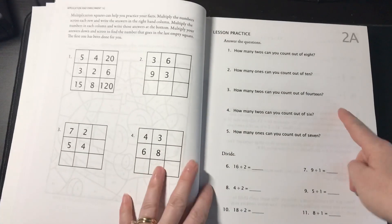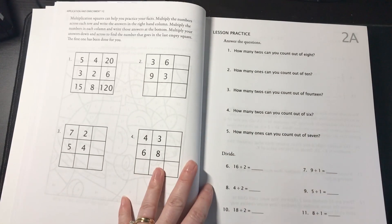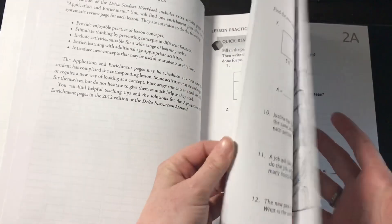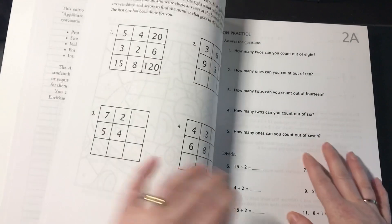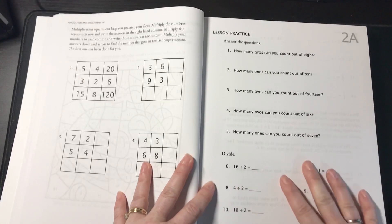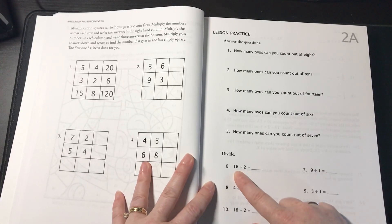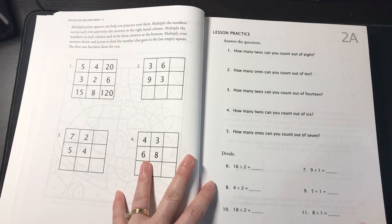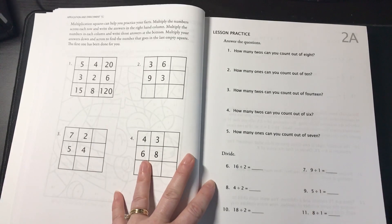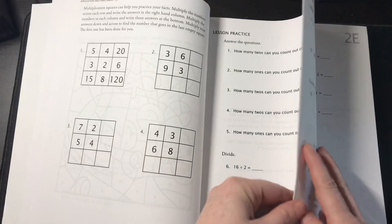Now, right away, 2A is going to be new material. Okay, so only lesson 1A is review from Gamma. You're going to jump right into division in 2A. Now, granted, it's easy division problems. And if they know their multiplication facts from Gamma, this will not be a problem. But it does jump right into new material in 2A.